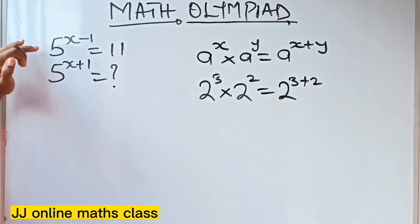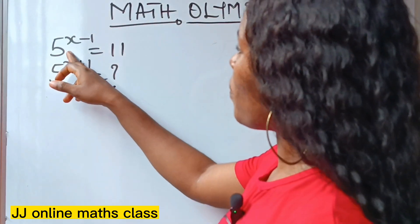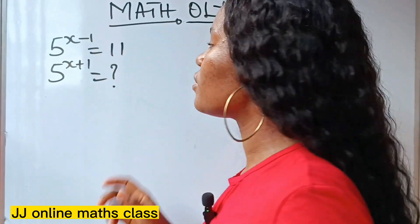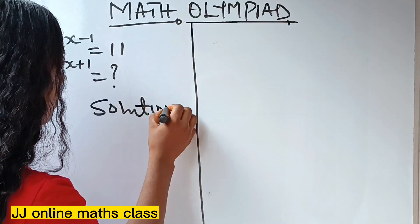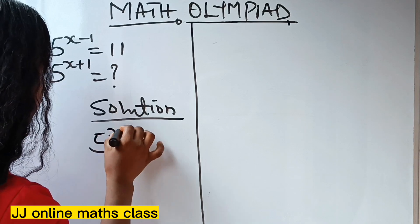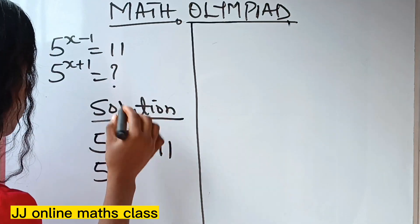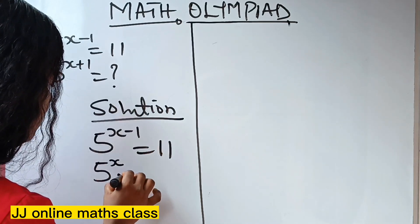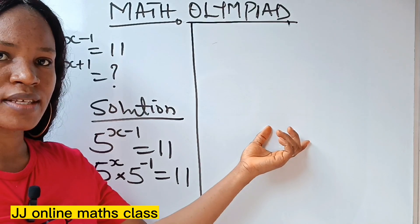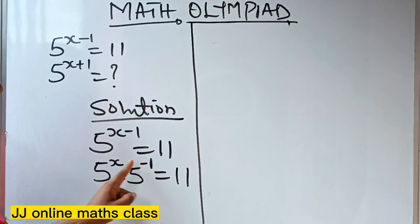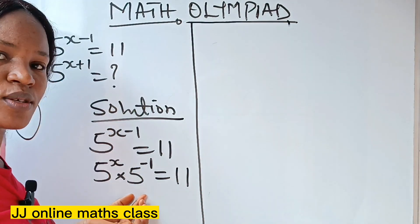Why am I bringing this up? If we apply it to what we have on the board — 5 to the power of x minus 1 is equal to 11 — we can rewrite this as 5 to the power of x times 5 to the power of minus 1 is equal to 11, based on what I just explained, because that is the only time we can pick one base and add the powers.